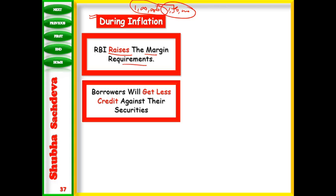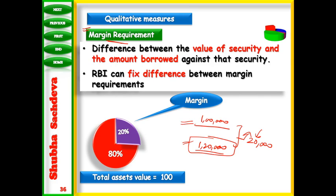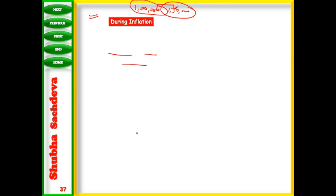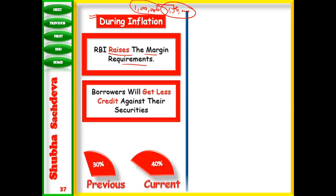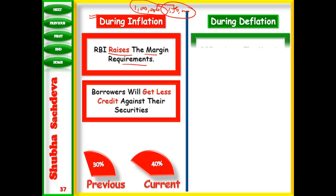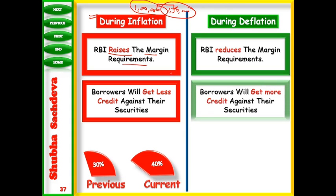RBI raises the margin requirements and borrowers will get less credit against their securities. Now they will put one lakh fifty thousand worth of securities and get less credit against them. At the time of deflation, RBI reduces this margin requirement to encourage more borrowing and increase money supply in the economy.